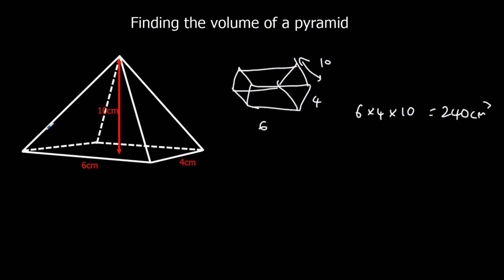So for the whole cuboid, if you imagine this space here was filled up, all this space was filled up right up to the top of the pyramid, it would be 240 centimeters cubed. A pyramid is one third of that size, so one third of 240, which is 80 centimeters cubed.